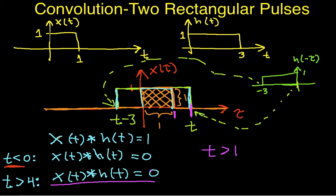And for the left edge of H to be to the left of the edge of X, we need T minus 3 to be less than 0. And we can work this out to get T is less than 3.